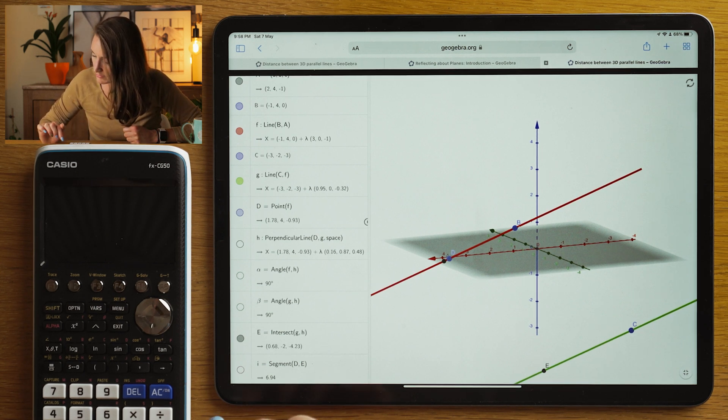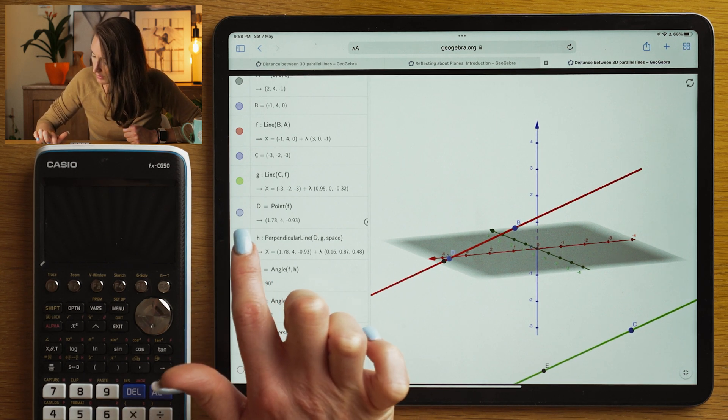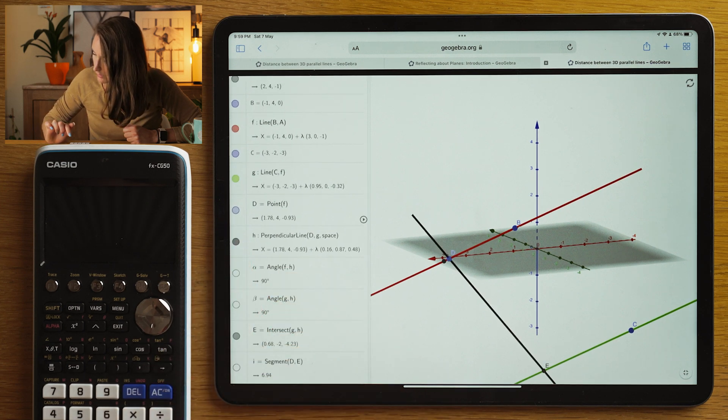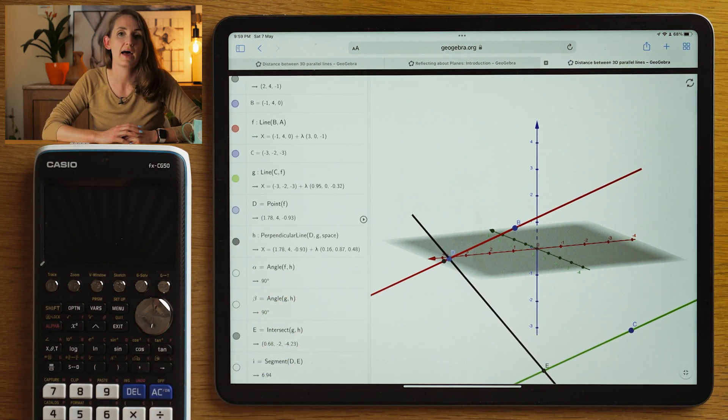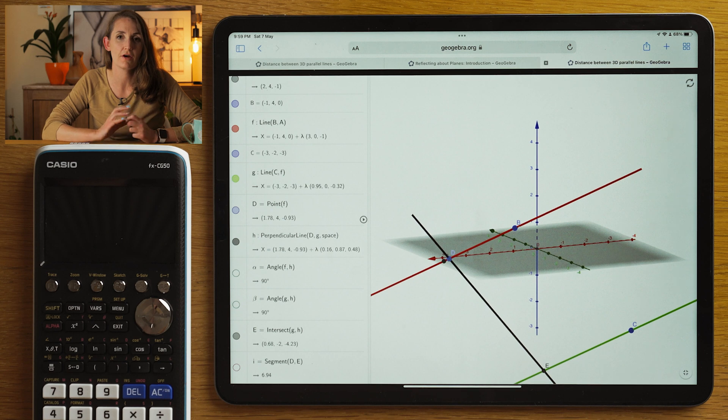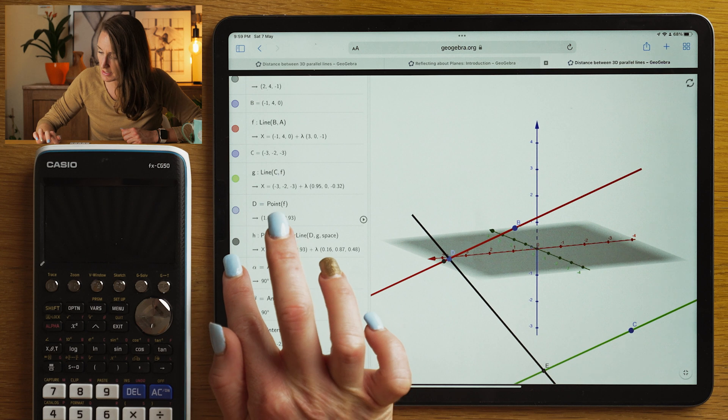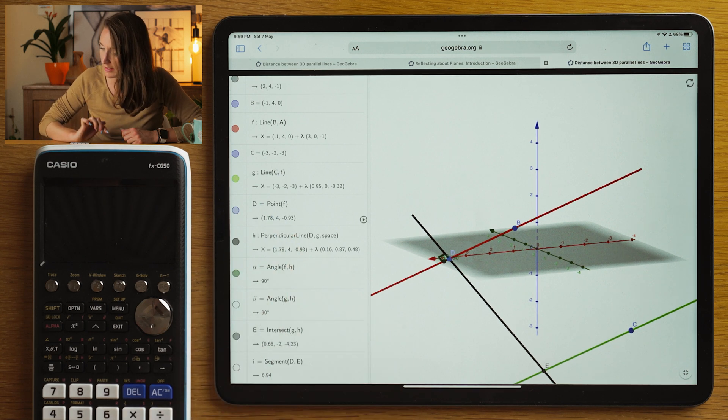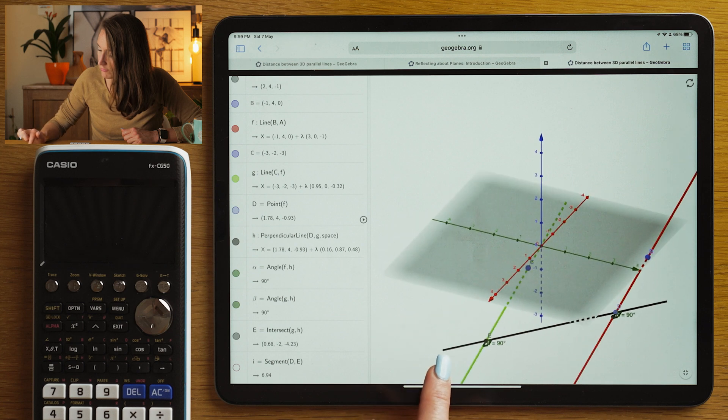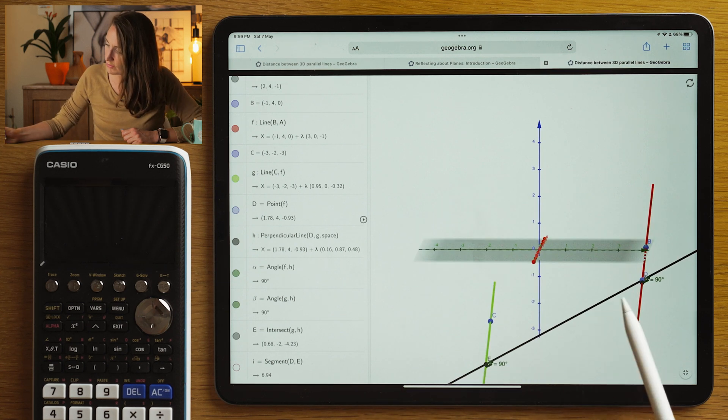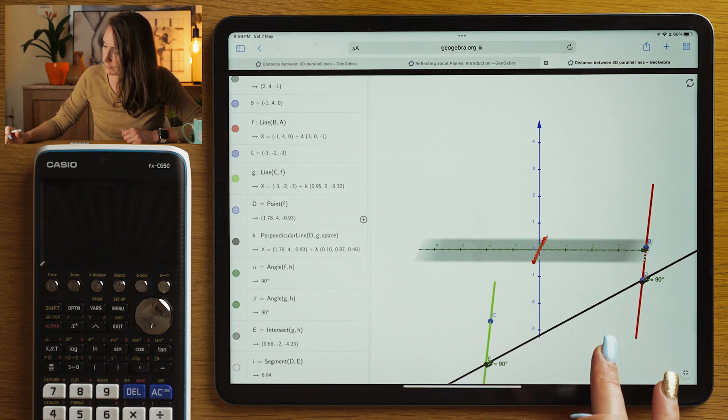So what our strategy is going to be is to create a line that crosses over the void, that crosses over the space between the two three dimensional lines, such that that specific line forms a 90 degree angle there and there. So that's what we're looking for. We're going to try and find a vector that would join these two points together.